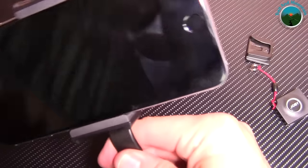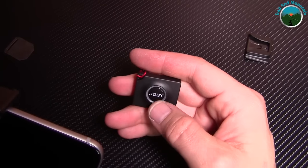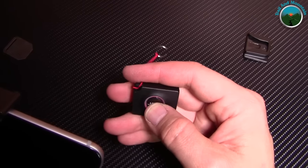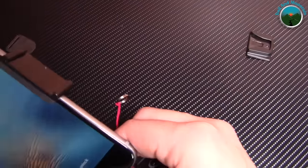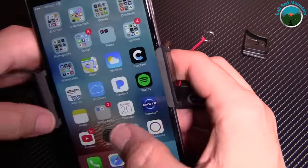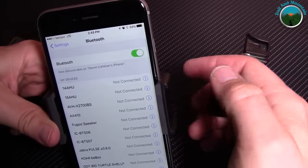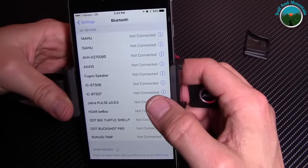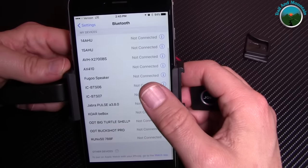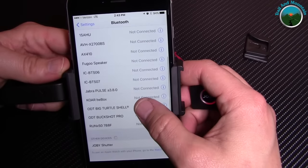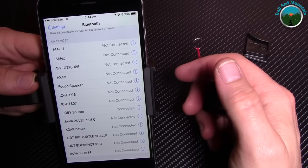All right, so here's the little shutter remote. Turn it on, turns to red and then it starts to flash. So I'm going to turn my Bluetooth on and let's see what we got, see if I can find it. Joby shutter, boom! Joby shutter connected.